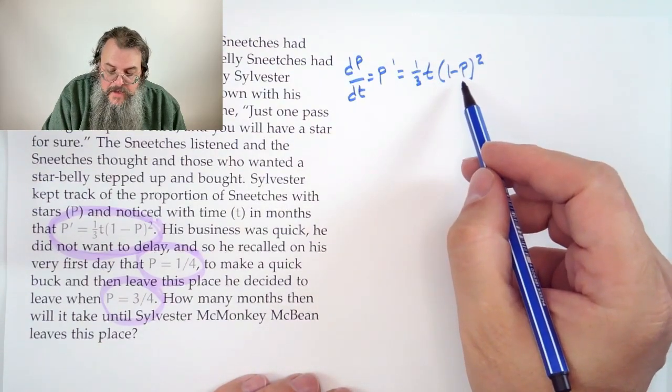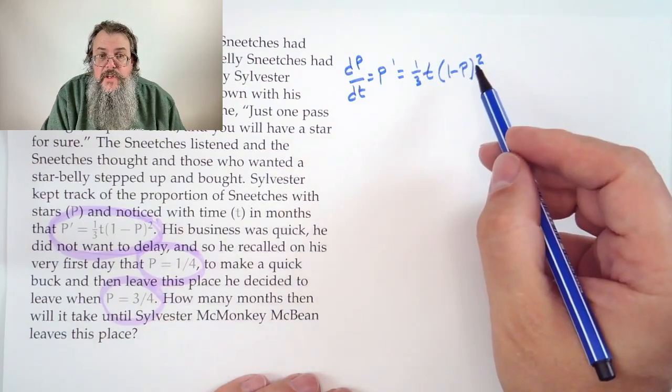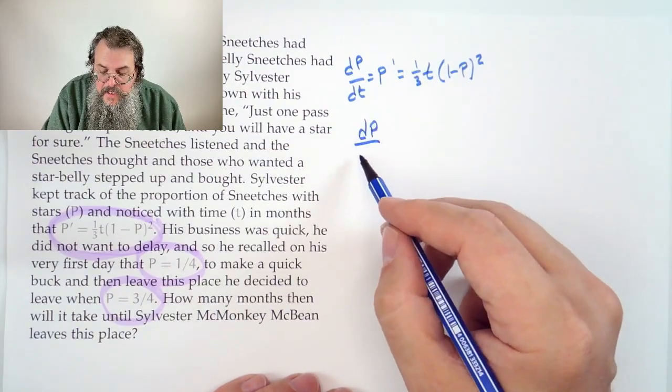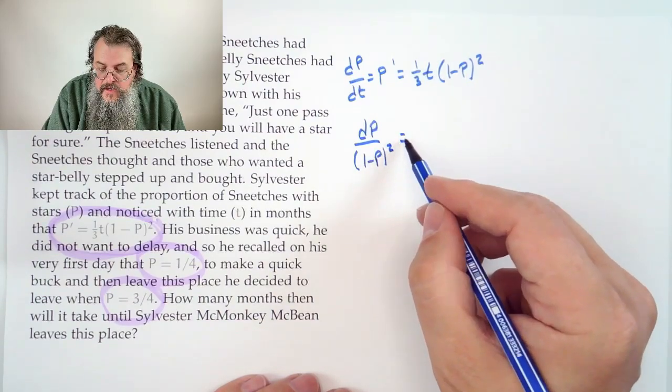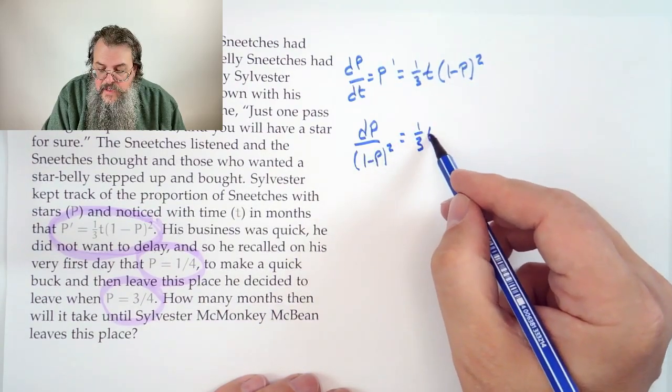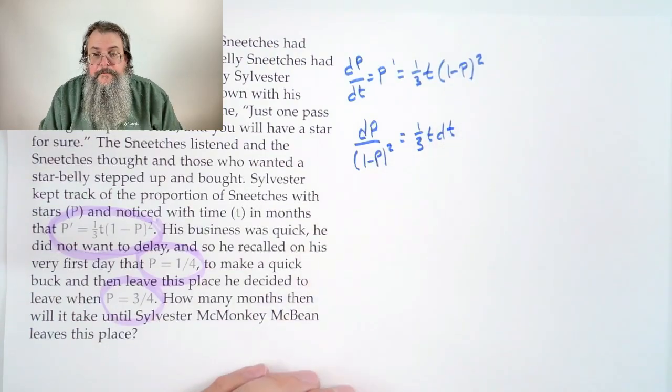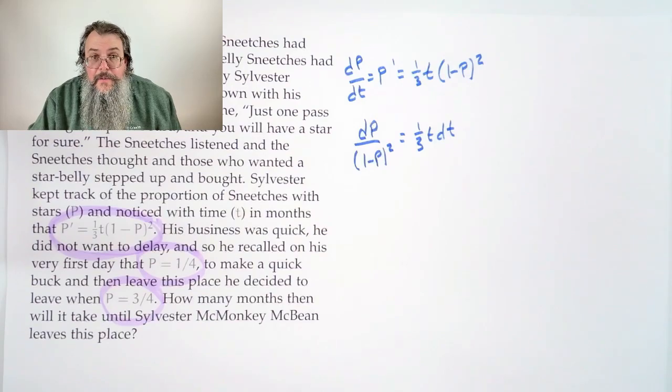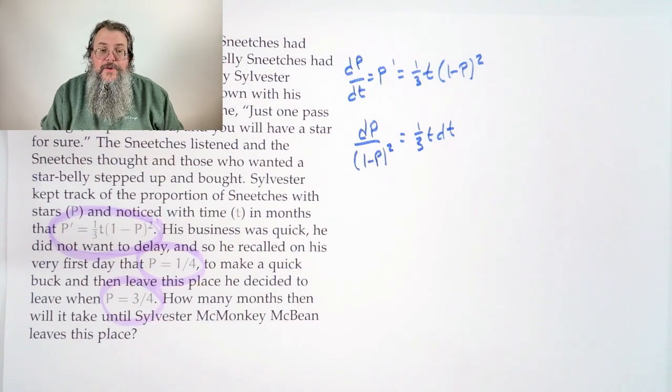You can move the (1 minus P) squared across, move the dT across, and we get dP divided by (1 minus P) quantity squared is 1/3 T dT. That's it for the separate, which means we can go into the integrate. So we integrate both sides.